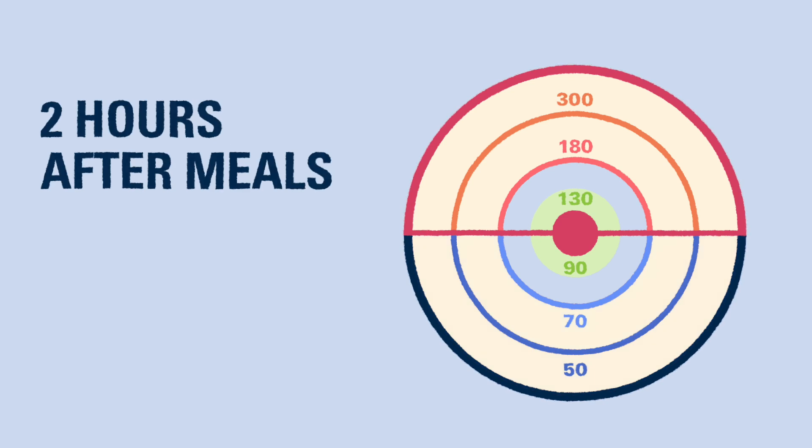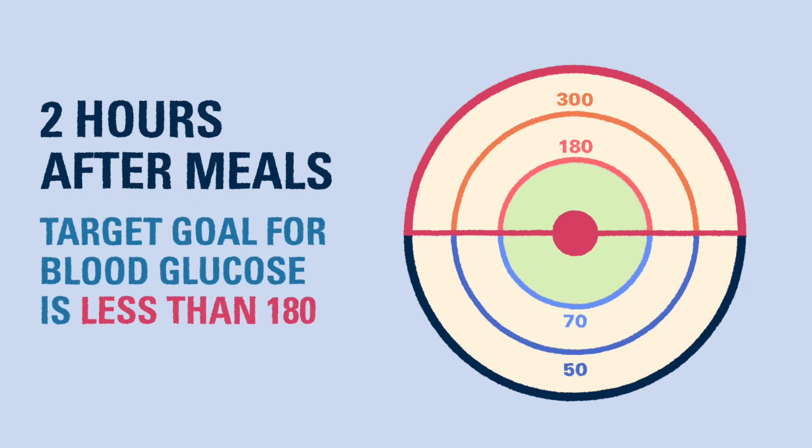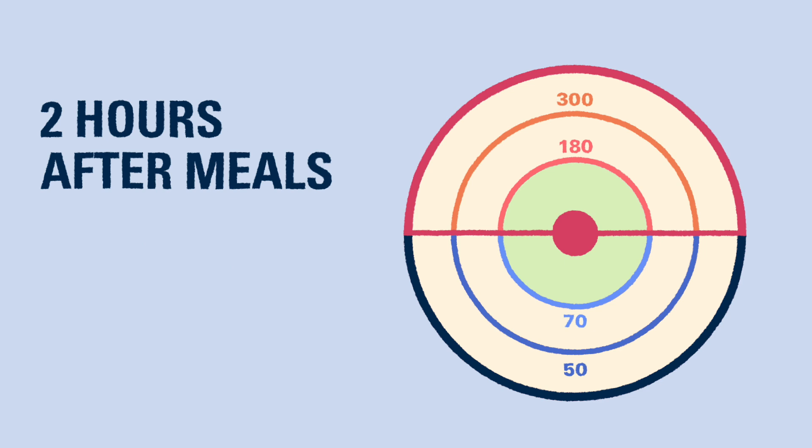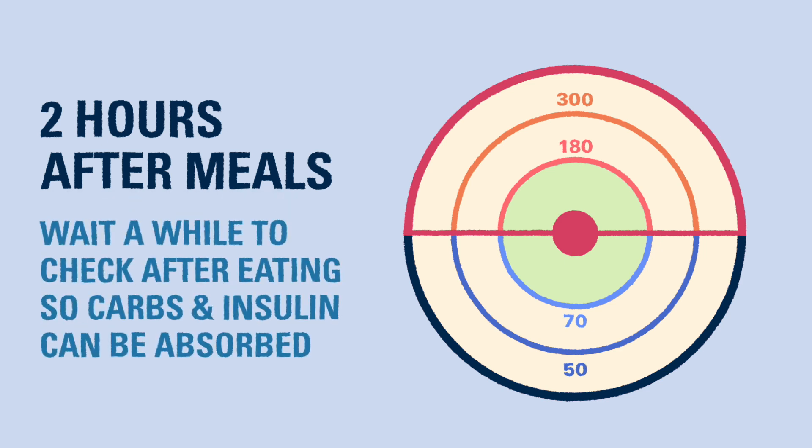Two hours after meals, the blood glucose should ideally be less than 180. It's important to wait a short time before checking blood glucose after eating, so both the insulin and carbs from the meal have time to be absorbed.